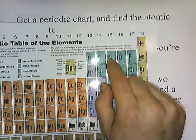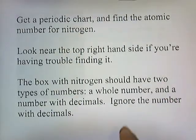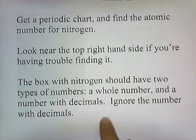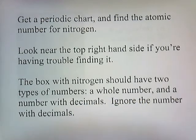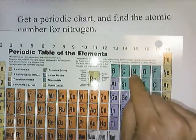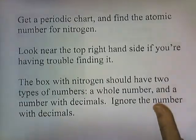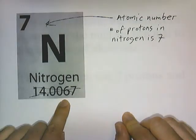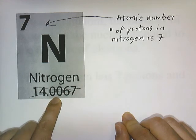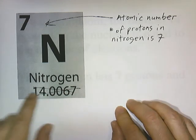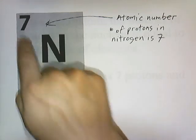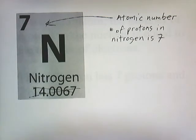Nitrogen is on the top right-hand side of the periodic table. The box with nitrogen should have two types of numbers: a whole number and a number with decimals. We're going to ignore the number with decimals. The whole number — number seven — is the atomic number of nitrogen, and that means that all nitrogen atoms have seven protons in the nucleus.